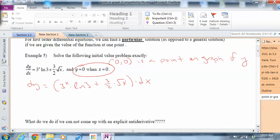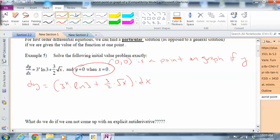dy equals 3 to the x times natural log of 3 plus 3 halves times root x times dx. And then if we integrate both sides we get y equals, now what's the antiderivative of 3 to the x times natural log of 3? The antiderivative of that is going to be 3 to the x. That's because the derivative of 3 to the x is 3 to the x times natural log of 3.